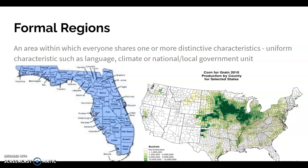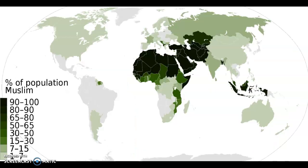So those are the three main types of regions: formal, functional, and perceptual. The map shown here is an example of a formal region — it shows the countries of the world that practice Islam. If you wanted to define an Islamic region of the world, the countries in the darkest category would be included. Note that not all of these countries are geographically connected, but they share a uniform religious characteristic that defines the formal region.